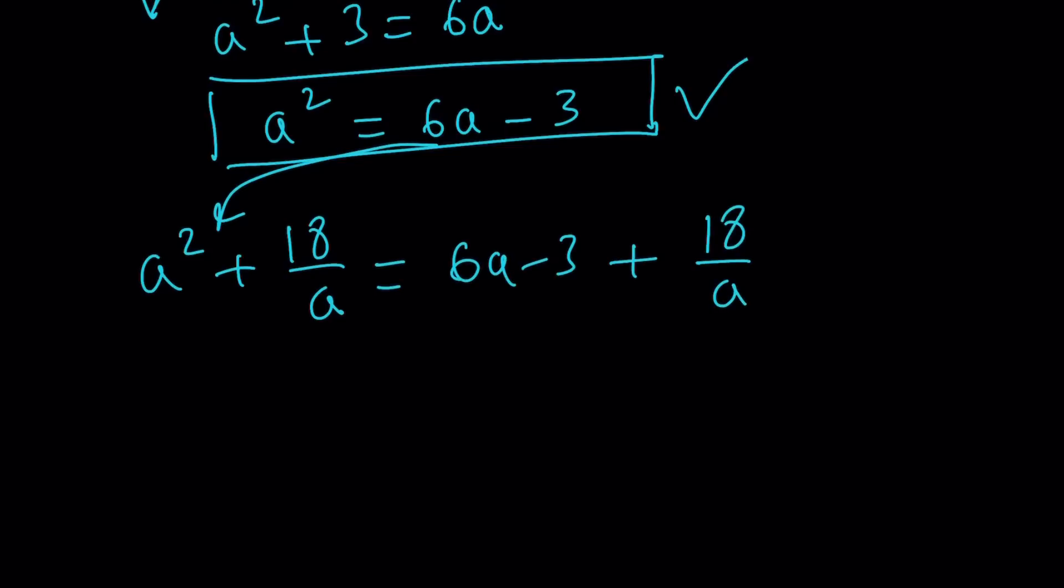So I'll just replace A squared directly, which is 6A minus 3 plus 18 over A. I do this because everything falls into place nicely. And then I'll make a common denominator. How about that? So if you make a common denominator, you're going to multiply this by A, like this and like that. 6A squared minus 3A over A. So we can add them. And this is divided by A.